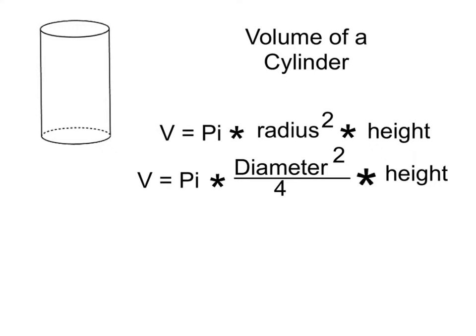Let's go ahead now and talk about the volume of a cylinder because the bin is in the shape of what we math people would call a right circular cylinder. Now the formula for that is well known - the volume is pi times the radius squared times the height.